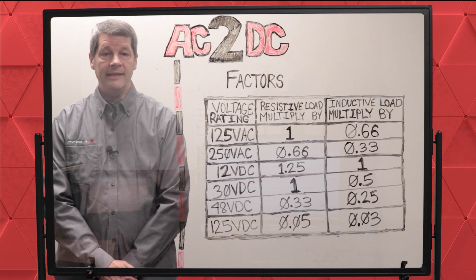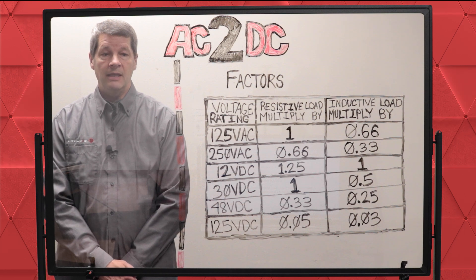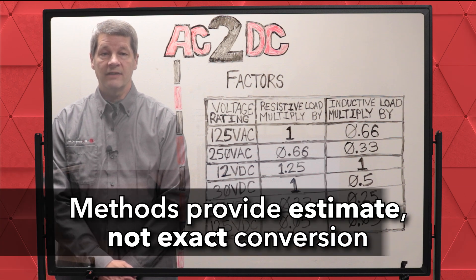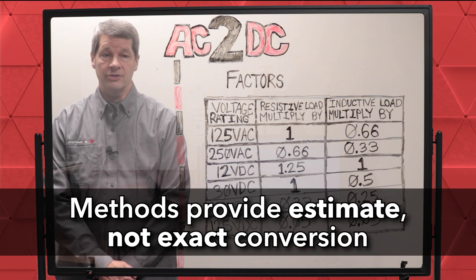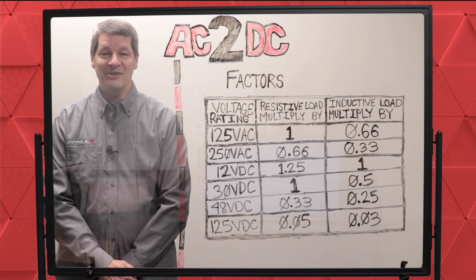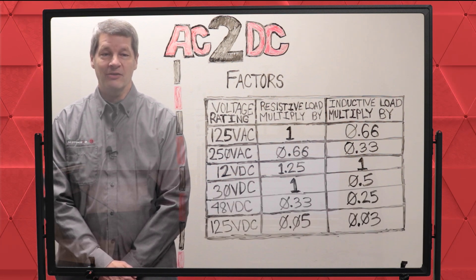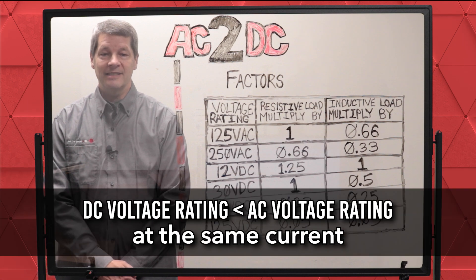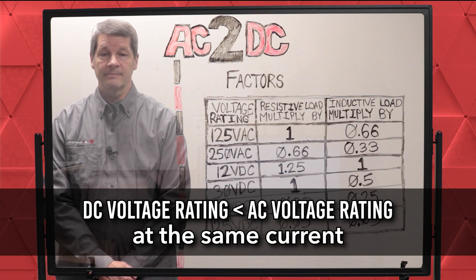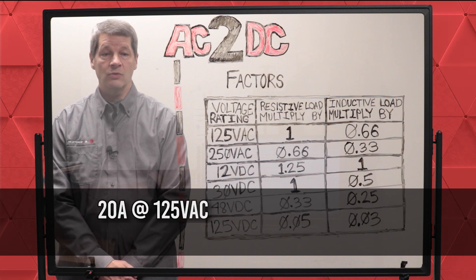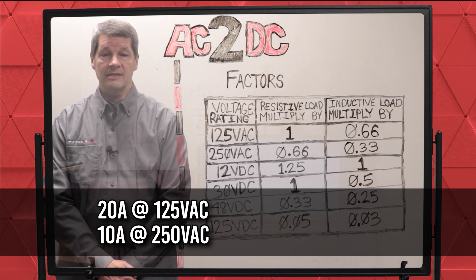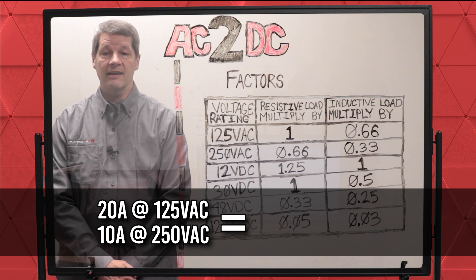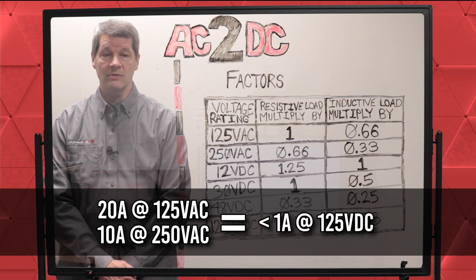Now let's look at how to convert AC to DC voltage. Keep in mind that the first two methods we go over will never provide a precise answer for your conversion, but they will give you a general idea. The first method of converting AC to DC voltage is with a mathematical formula. A switch's DC voltage rating is always lower than the AC voltage rating at the same current. For example, a switch rated for 20 amps at 125 VAC or 10 amps at 250 VAC would typically have a current rating of less than 1 amp at 125 VDC.